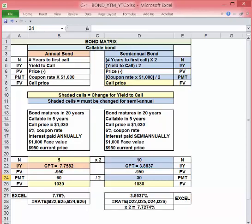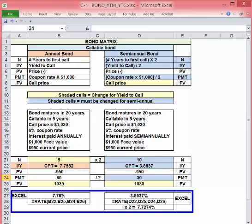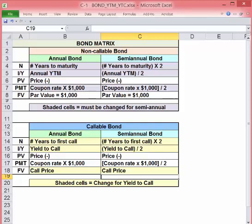This is a bond matrix. It recaps what we've just covered in this video tutorial and should help you get comfortable with when adjustments are needed and what adjustments to make for semi-annual and/or callable bonds.